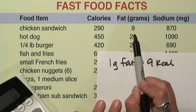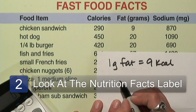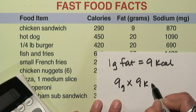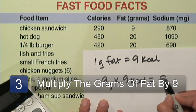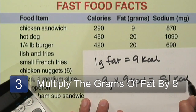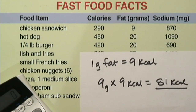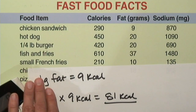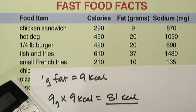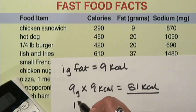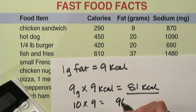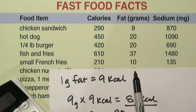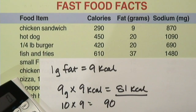So for instance here, 9 grams of fat is going to be 9 grams times 9 calories, equaling 81 calories. Let's try another example — our small french fry here. We have 10 grams of fat. 10 times 9 equals 90. So 90 calories of this product come from fat.